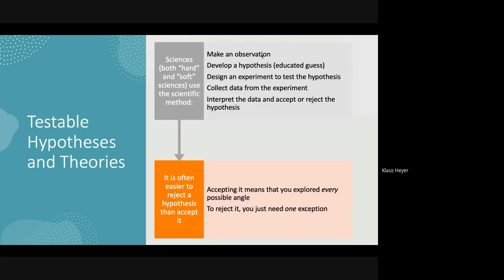We usually start with the null hypothesis, meaning we're actually trying to reject our hypothesis. That sounds backwards, but it's easier to reject a hypothesis than to accept it, because accepting it means you've looked at every conceivable possibility. For example, to confirm all swans are white you'd have to look at every swan on the planet. But you only need to find one non-white swan to reject the hypothesis.